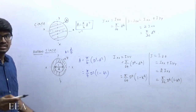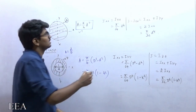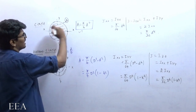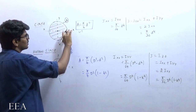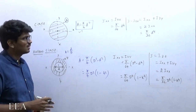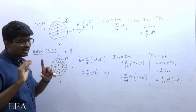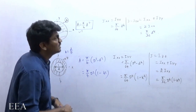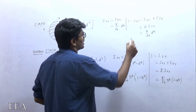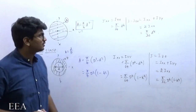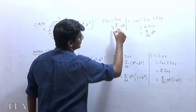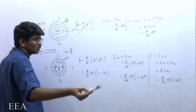Ixx and Iyy are both equal because the circle is completely symmetric about both the X and Y axes. So J, the polar moment of inertia, by the perpendicular axis theorem equals Ixx + Iyy = 2·Ixx, which is π/32 · d⁴, since Ixx = Iyy = π/64 · d⁴.